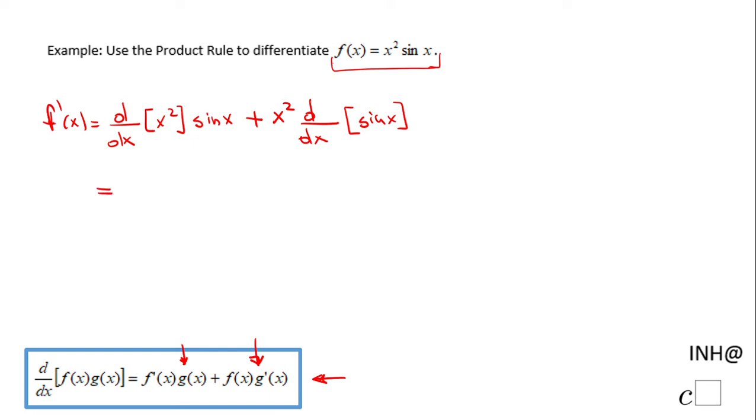The derivative of x² is 2x, so we have 2x sin(x) plus x², and the derivative of sine is cosine x. So this is the final form.